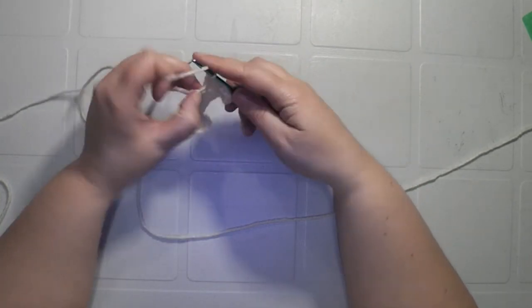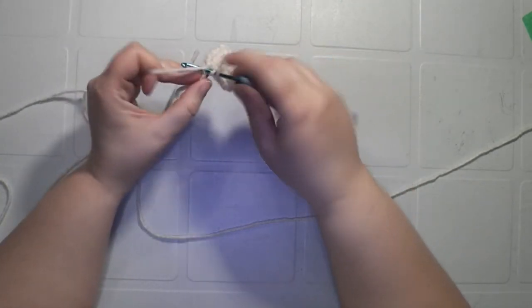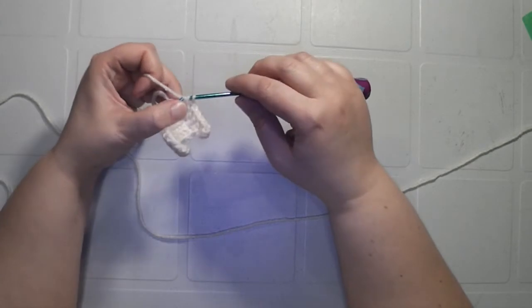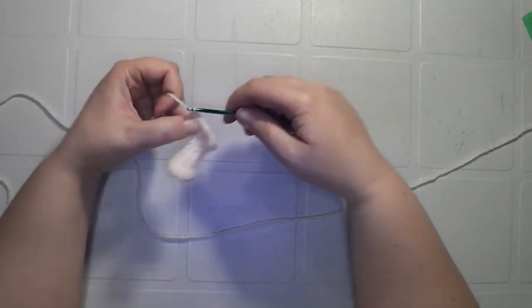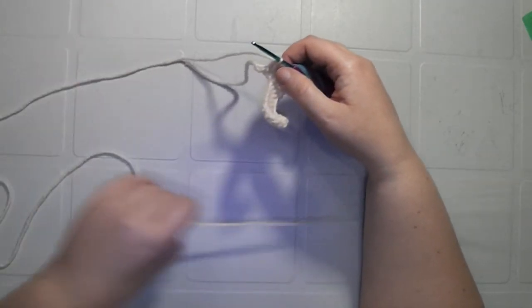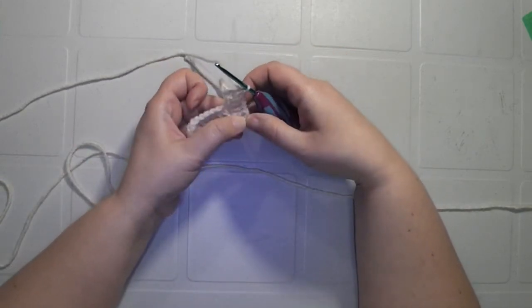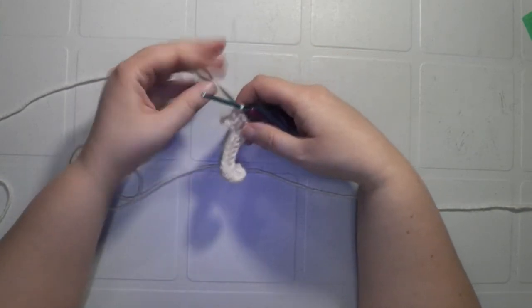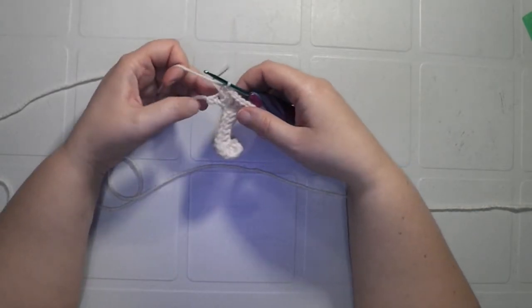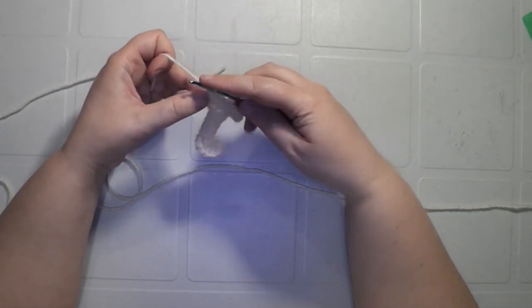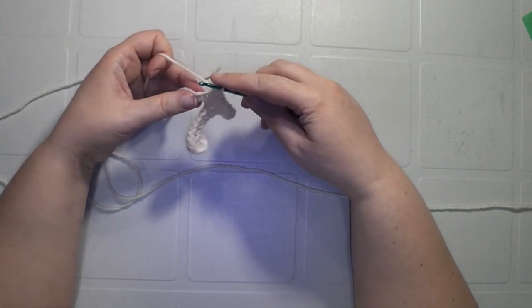So we're going to put a double crochet in this first chain here that you're actually your original chain. So then we're going to be doing one more double crochet into the next, it's the second last chain.